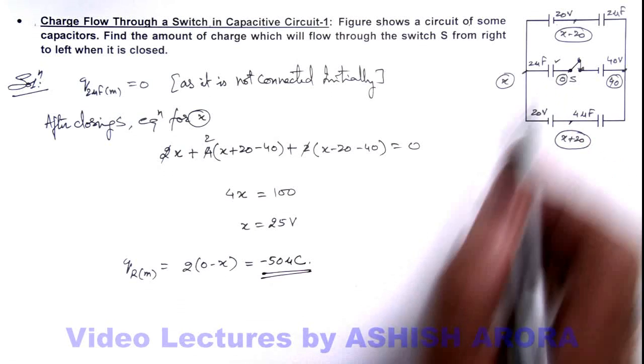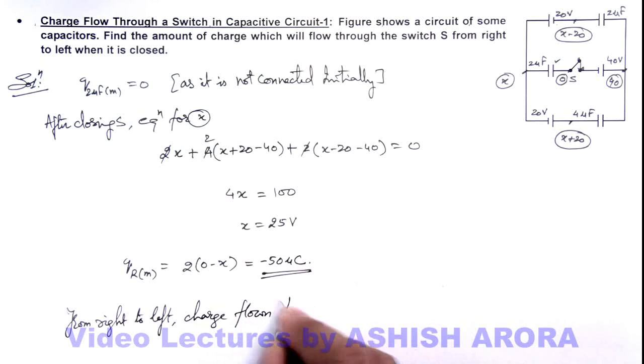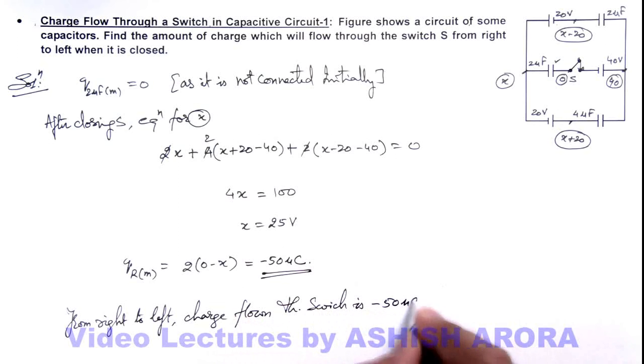So here we can write, from right to left, charge flown through switch is minus 50 microcoulombs. That is the answer to this problem.